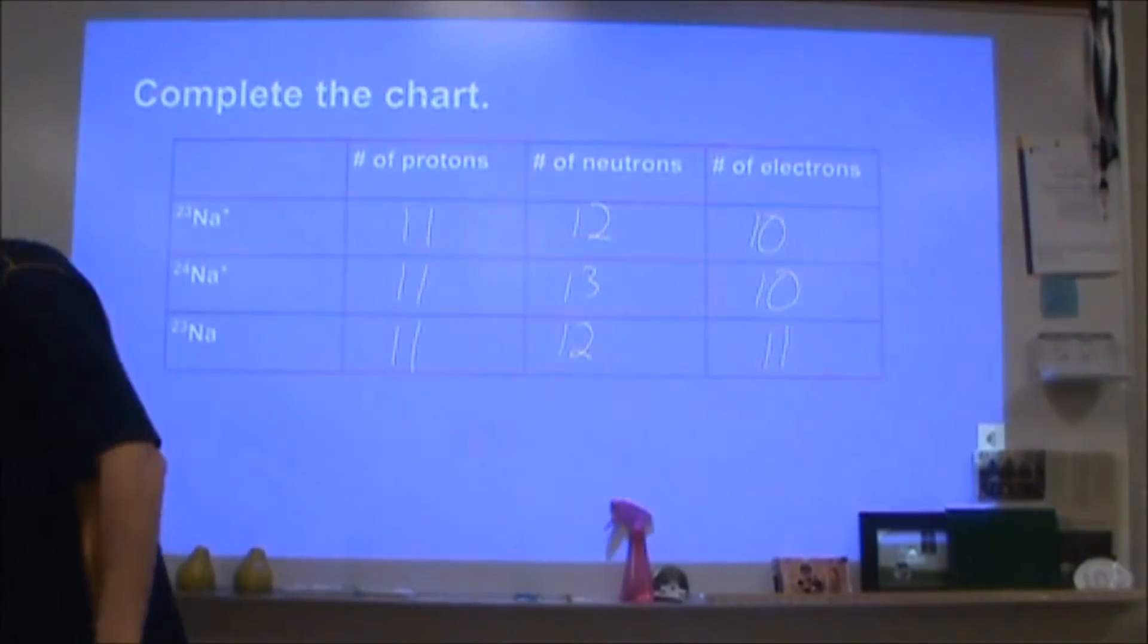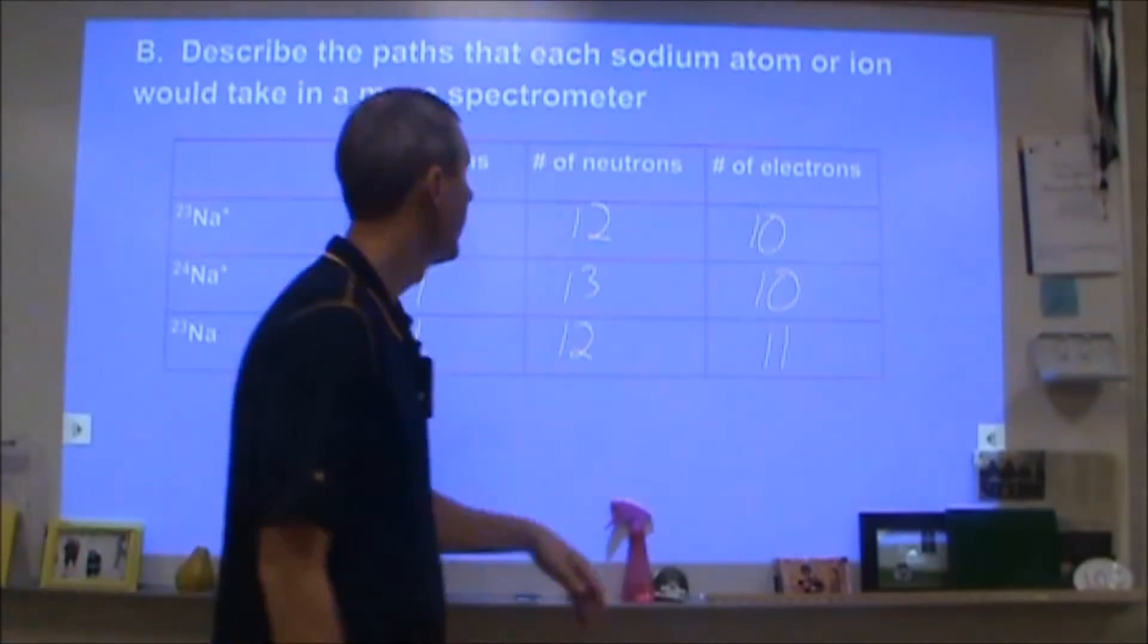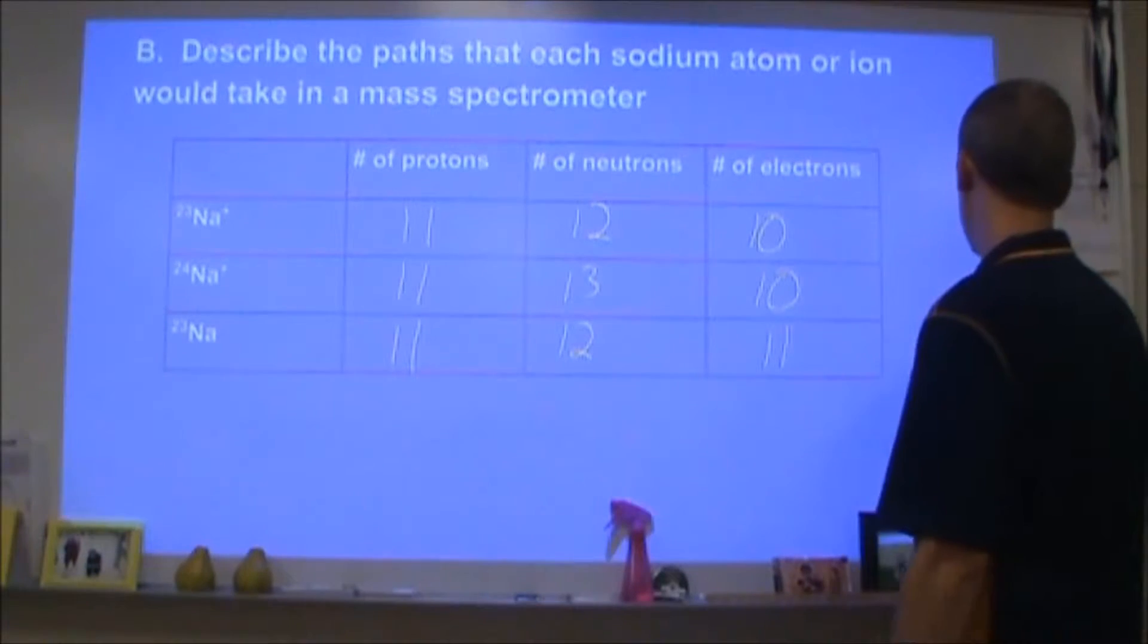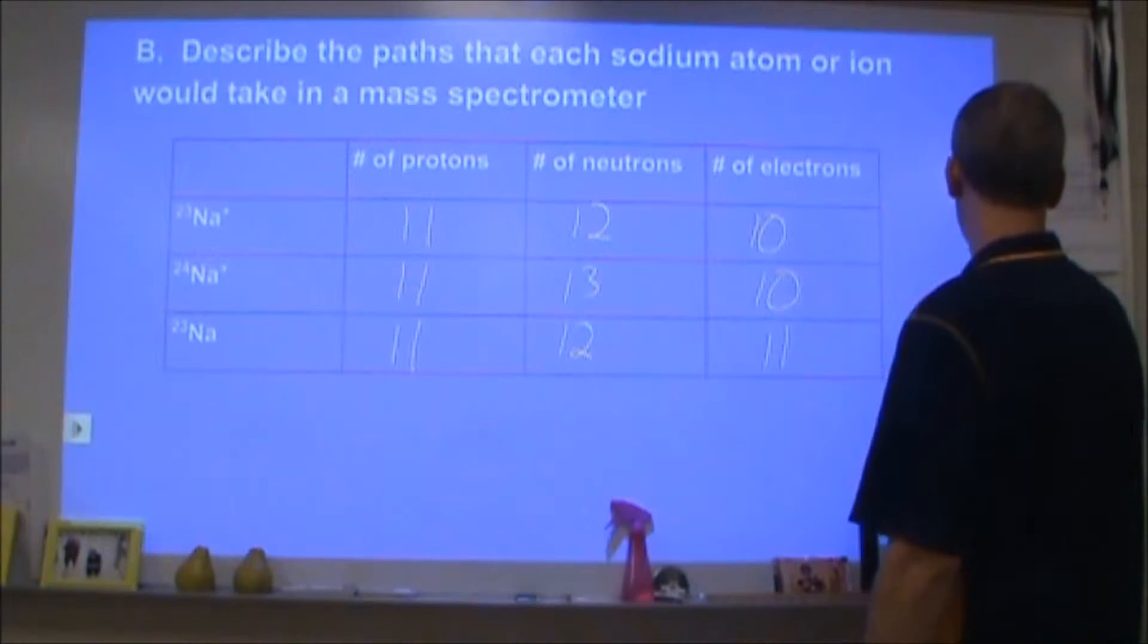Now from that, in part B it says describe the path that each of these would take in a mass spectrometer. Okay, so let's go ahead and flip boards here for a second.